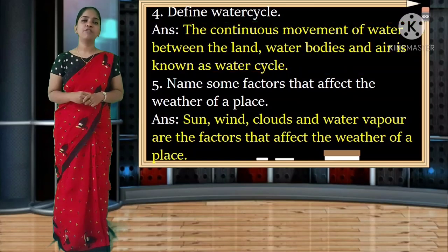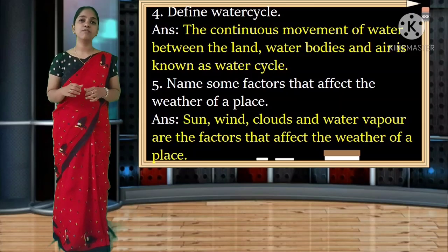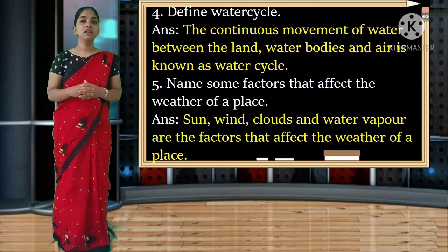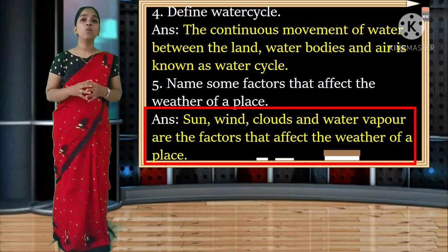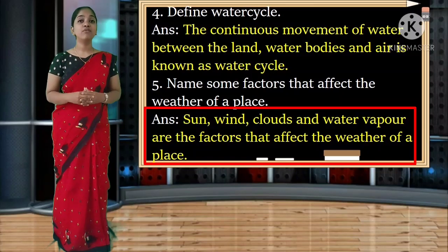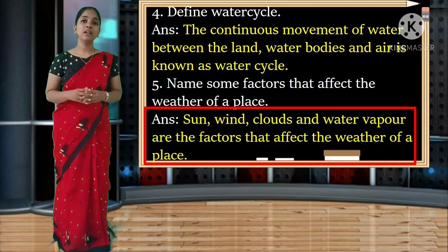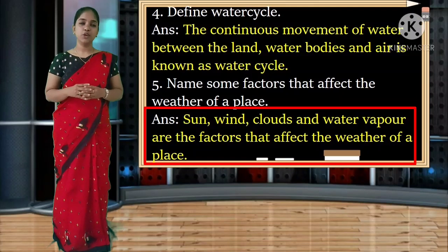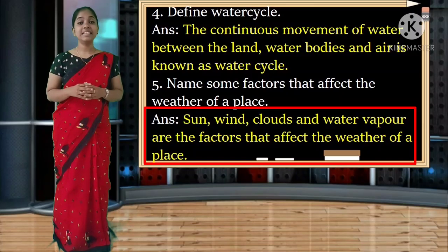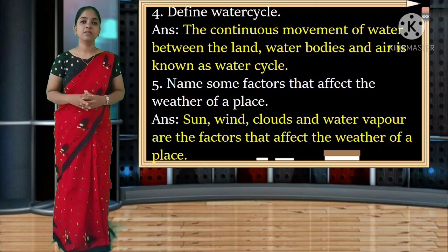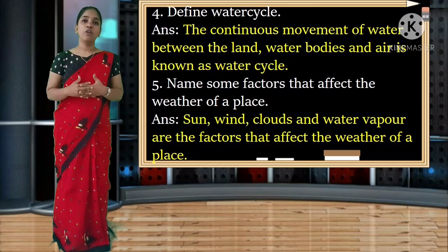Fifth: name some factors that affect the weather of a place. Sun, wind, clouds and water vapour are the factors that affect the weather of a place. Spelling: sun S-U-N, wind W-I-N-D, water vapour W-A-T-E-R-V-A-P-O-U-R.